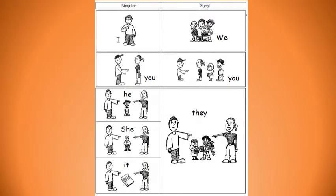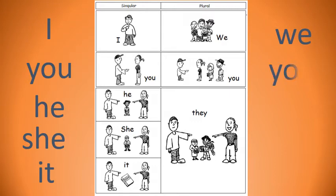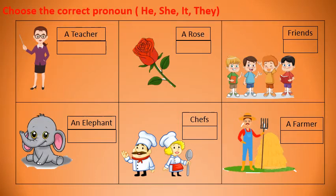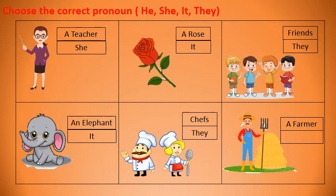Look at this picture. It shows: I, you, he, she, it, we, you, they. These are the list of pronouns we use. Pronouns can be in singular and plural form. Let's look at some simple words and understand subject pronouns better. Choose the correct pronoun using he, she, it, or they. A teacher becomes 'she' because it is a female teacher. A rose becomes 'it'. A group of friends changes to 'they'. An elephant becomes 'it'. Chefs change to 'they' because there are two. A farmer becomes 'he' because it is a male farmer.